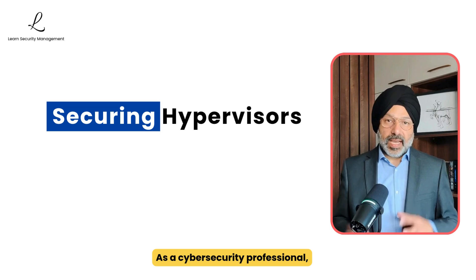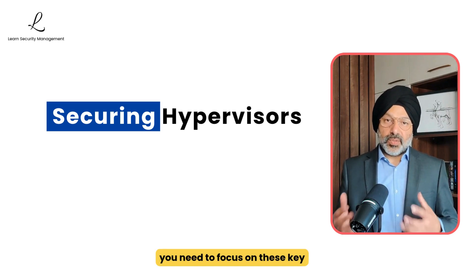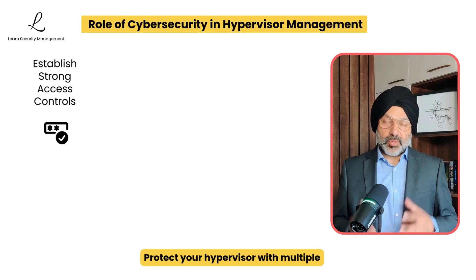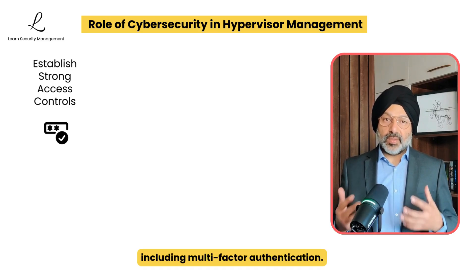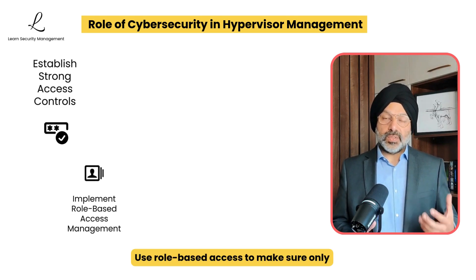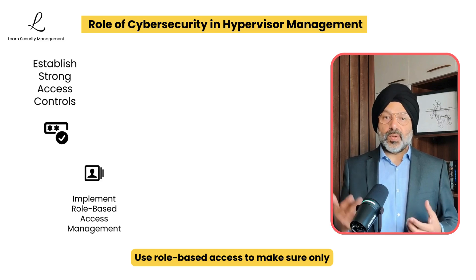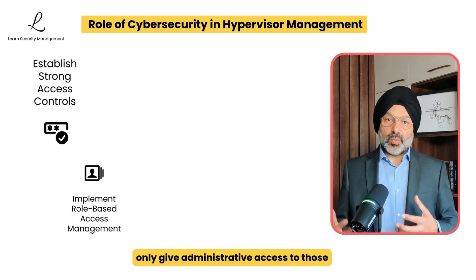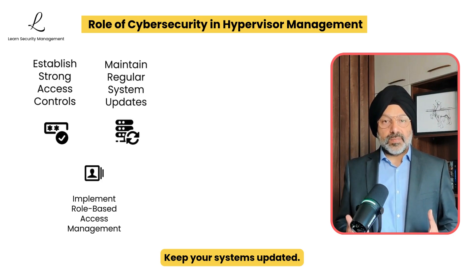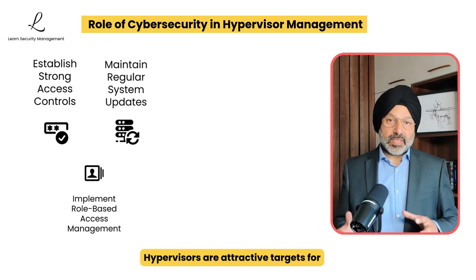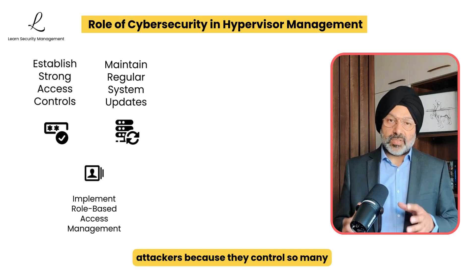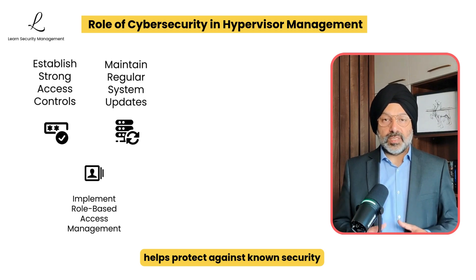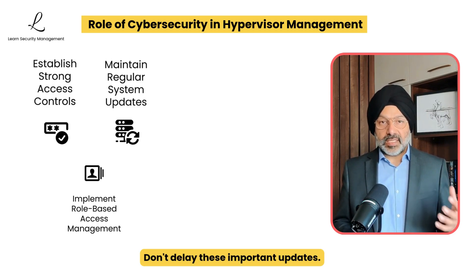When working with hypervisors, security must be a top priority. First, set up strong access controls — protect your hypervisor with multiple security layers, including multi-factor authentication, and use role-based access to ensure only authorized team members can make important changes. Only give administrative access to those who truly need it. Keep your systems updated; hypervisors are attractive targets for attackers because they control so many resources, so following a regular update schedule helps protect against known security flaws. Don't delay these important updates.